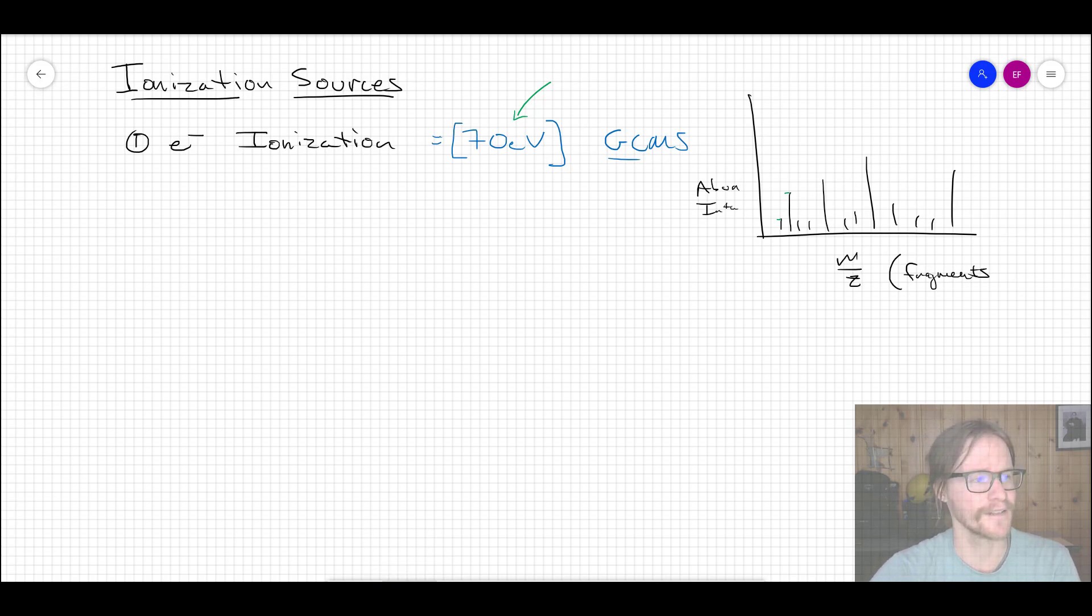So the problem with that sometimes is this is a brute force mechanism. And sometimes if you have a fragile molecule, something that's not very stable to begin with, the whole process of getting it into the gas phase, even if it's still staying together and hasn't thermally decomposed and broken apart yet, once you smash it with 70 electron volts, you may completely destroy all of the original molecule.